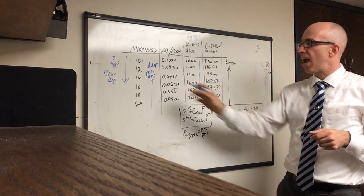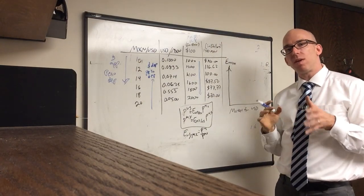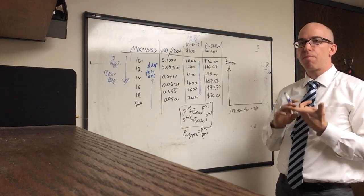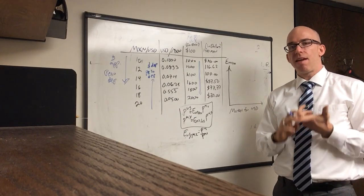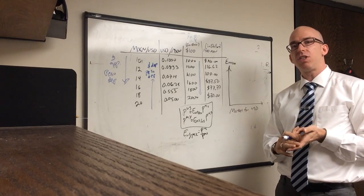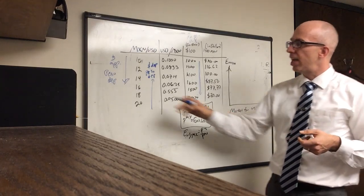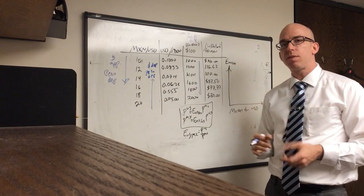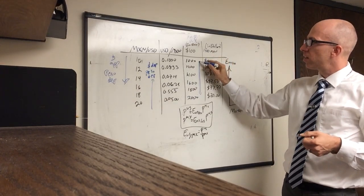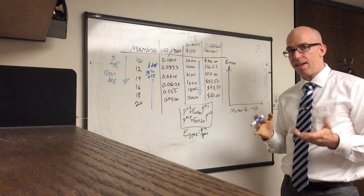You could also say that as the dollar appreciates, US exports become more expensive. The exchange rate changes the price of traded goods. The appreciating currency finds it harder to export — if the US dollar appreciates, our exports become more expensive. From the other point of view, as the peso depreciates, its imports become more expensive. Long story short, an appreciating currency will export less, and a depreciating currency will import less.